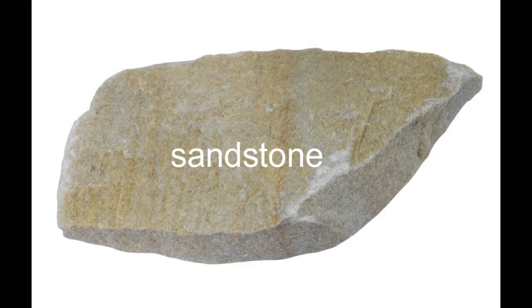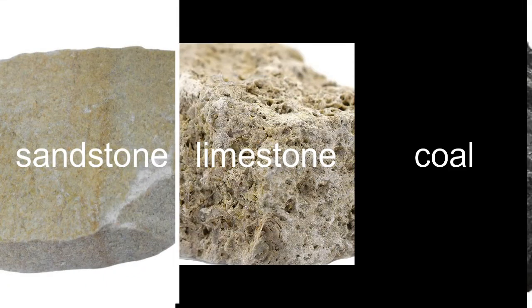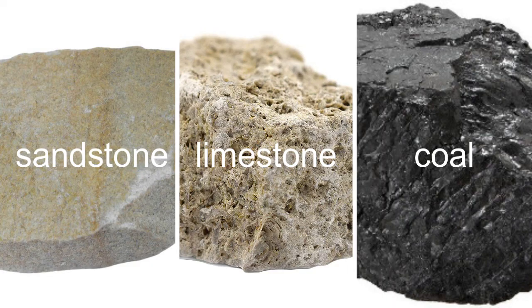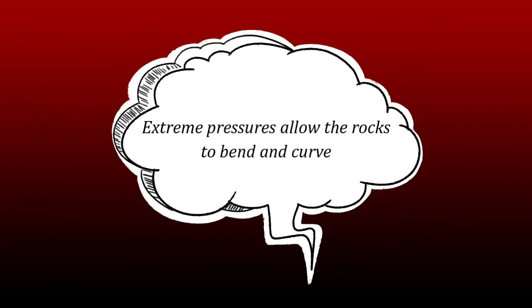Sandstone is a clastic sedimentary rock with a very rough texture where you can feel the individual grains. Limestone is a chemical sedimentary rock with a hard, fine grain texture. Sedimentary rocks can also go through uplift, or they can be pushed down where extreme temperatures and pressure builds up.